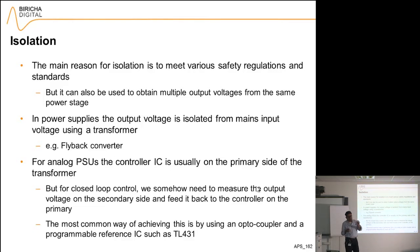For example, you can have an isolated power supply with a transformer that has multiple windings on the secondary, and therefore you can get multiple voltages.